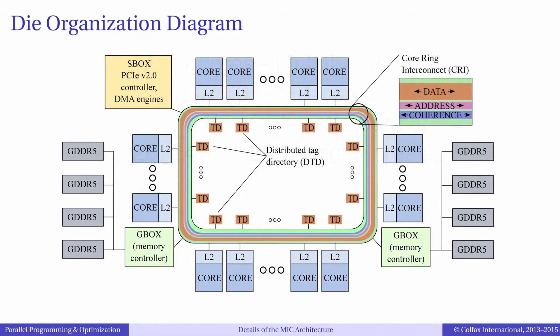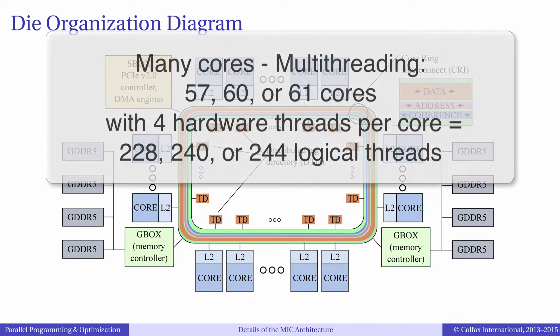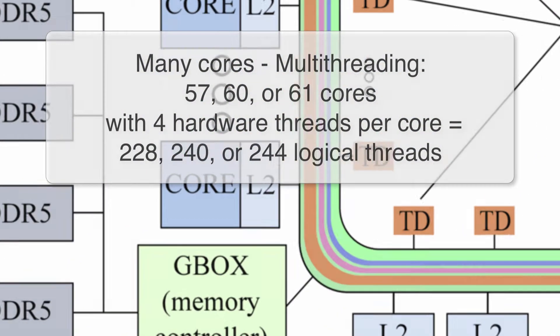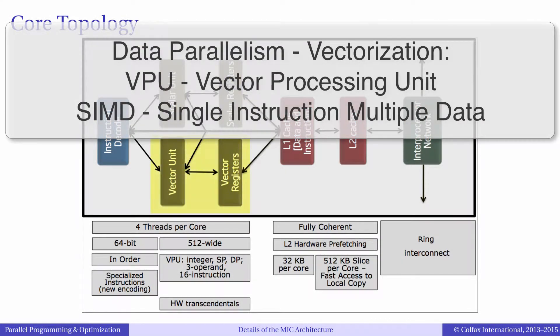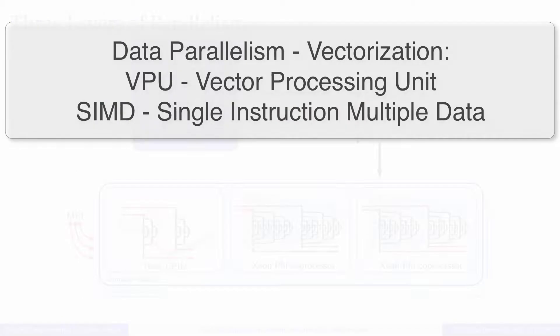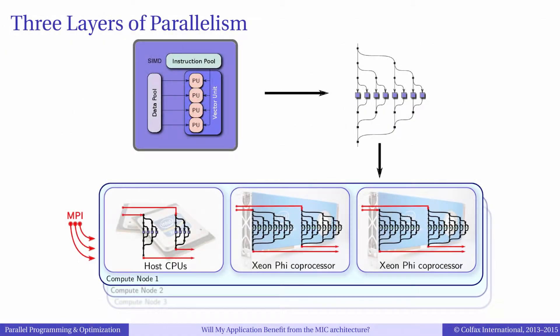The high computational power of Intel Xeon Phi Processors is derived from hardware parallelism. Therefore, applications that benefit from Xeon Phi Processors must be able to take advantage of the parallelism available on the MIC architecture. In this context, it is useful to think of what we call three layers of parallelism.